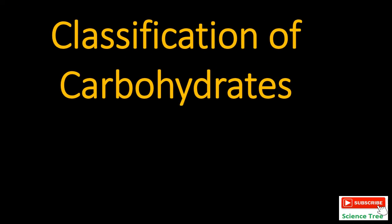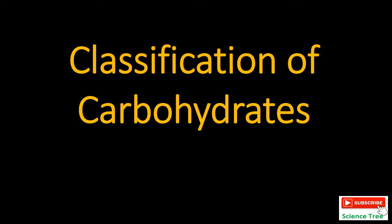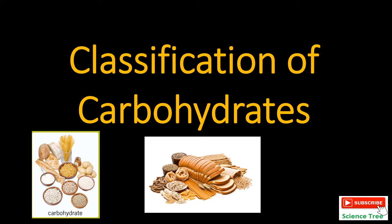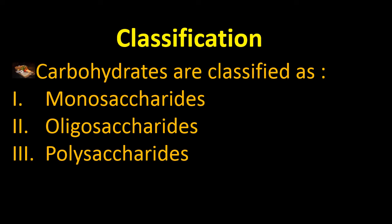Welcome to Science Tree channel. Today's topic is classification of carbohydrates — this is chapter number 13 from class 10. Carbohydrates are the major source of energy for the body, very simple and easy to digest. In the classification, carbohydrates are classified as monosaccharides, oligosaccharides, and polysaccharides. We will learn them one by one.